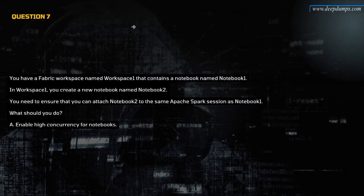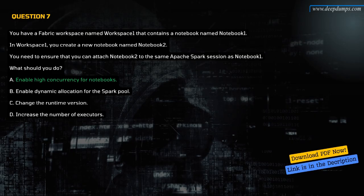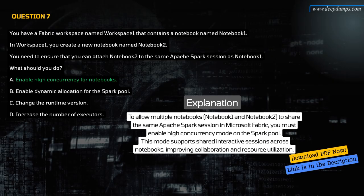Question 7. You have a Fabric workspace named Workspace 1 that contains a notebook named Notebook 1. In Workspace 1, you create a new notebook named Notebook 2. You need to ensure that you can attach Notebook 2 to the same Apache Spark session as Notebook 1. What should you do? A. Enable high concurrency for notebooks. B. Enable dynamic allocation for the Spark pool. C. Change the runtime version. D. Increase the number of executors. The correct answer is A. Enable high concurrency for notebooks. High concurrency allows notebooks to share a single session, enabling collaboration and improved Spark resource utilization.